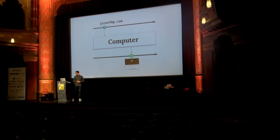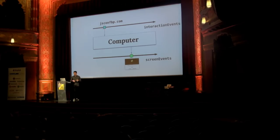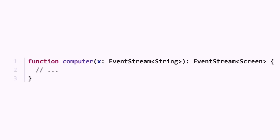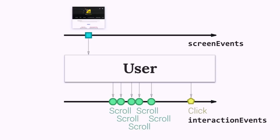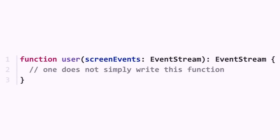So now we know that the computer is not a function from a string to a screen — it's a function from an event stream of strings to an event stream of screens. We could name the top one 'interaction events' — whatever you do as a user — and the bottom one 'screen events' — whatever the computer generates. If we would write this in JavaScript, actually TypeScript here just to show the types, this is roughly how we would get started. We just need to fill in what happens inside that function. All event streams have this 'listen' method — it's kind of like addEventListener for clicks, so no mystery here. The user function will do the opposite: it will take the screen events as input and generate interaction events as output. But how can you write this in JavaScript? We would need your brain for that. No can do.